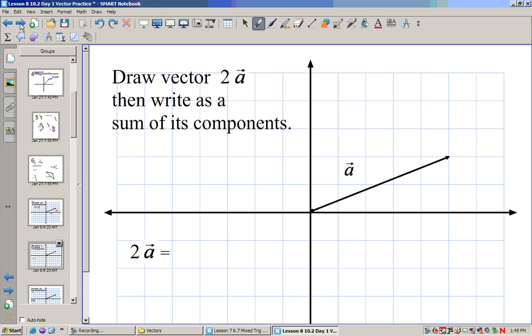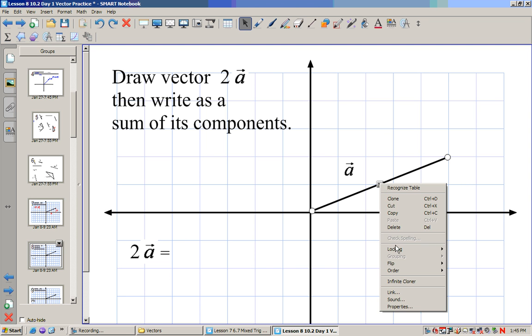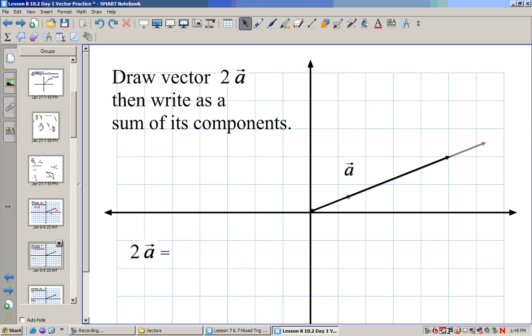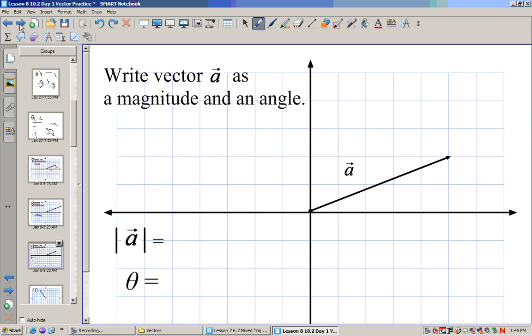Now write the vector 2a. Or draw the vector 2a. And write it in terms of its components. Now 2a would be if I took another one of these. And I put it at the end of a. My screen's not even big enough for that. It just keeps on going. So 2a would be not 5 to the right. But 10 to the right. And 4 up. Notice how that relates to this. It's just double those numbers. 10i, 4j.